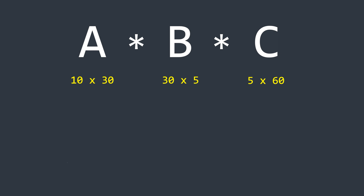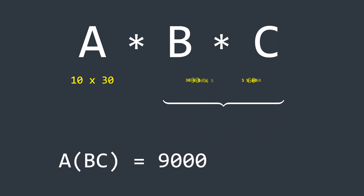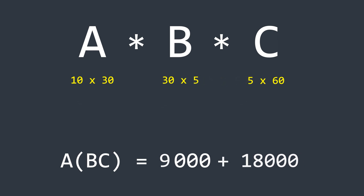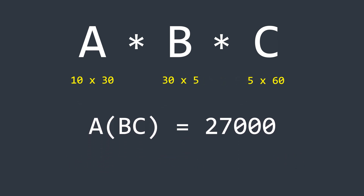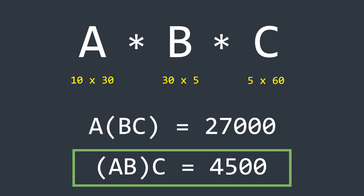If we multiply B and C first, the total number of operations is 9,000, and then multiplying the resulting matrix with A takes 18,000 operations — giving a total of 27,000. If we multiply A and B first and then multiply with C, it takes only 4,500 operations — much more efficient than 27,000 operations, making it the better approach.